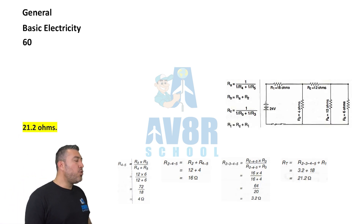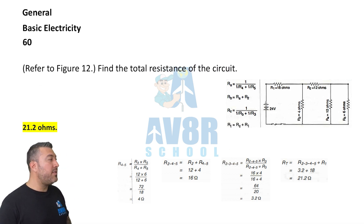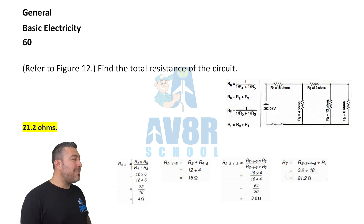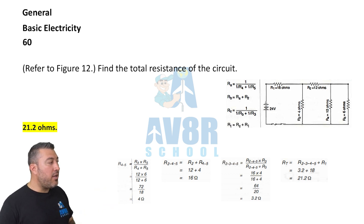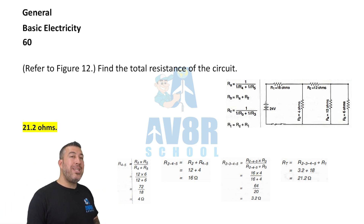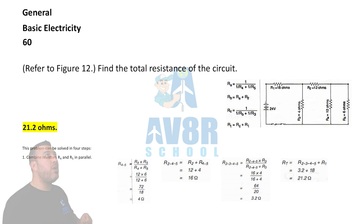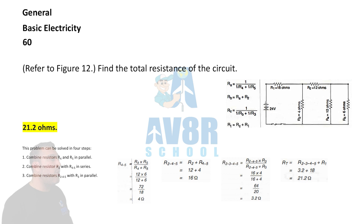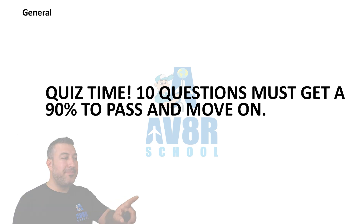Question 60. Another figure — Figure 12. Find the total resistance of the circuit. Once you do your calculations, you should get 21.2 ohms total resistance.